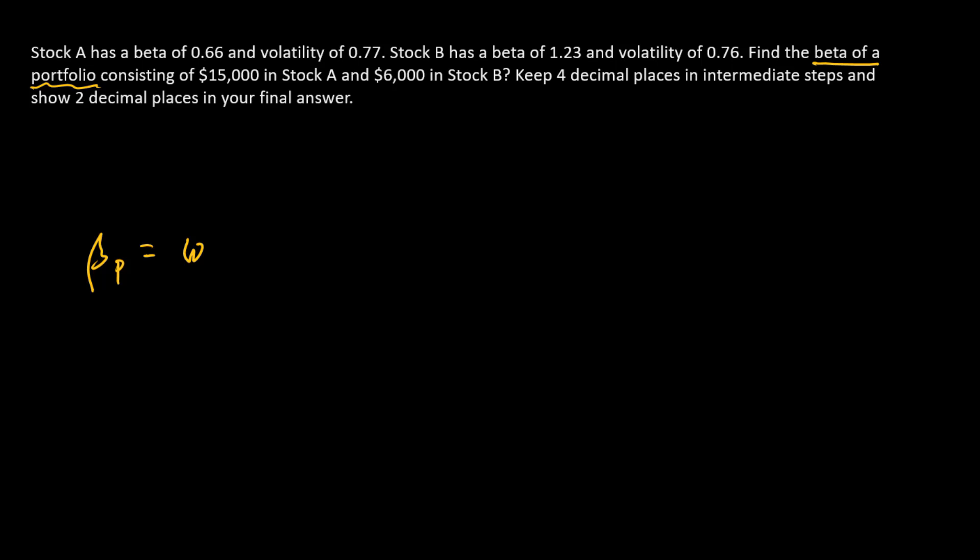So the beta for a two-stock portfolio is going to be the weight of component A times the beta of component A plus the weight of component B times the beta of component B. So all we need is weights and betas, and we can calculate the portfolio beta.